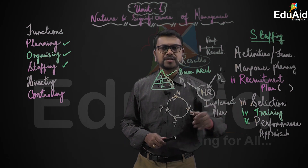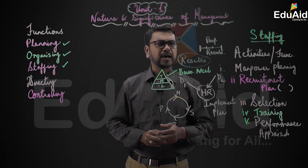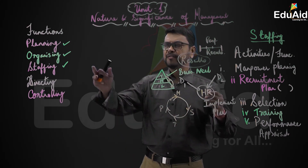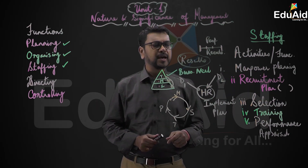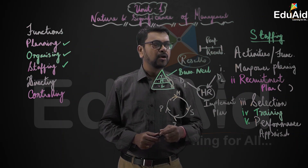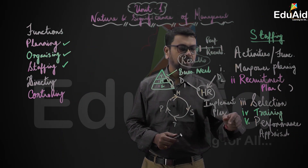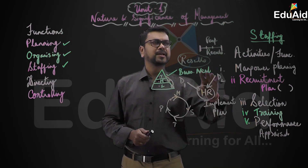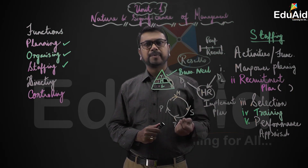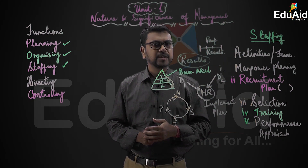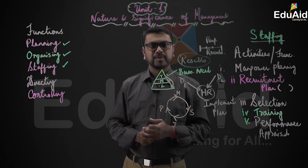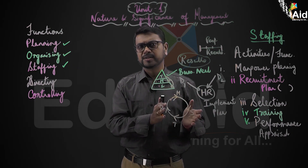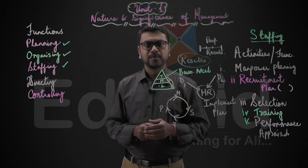We have come to the end of the topic on staffing as a function of management. Write down a few practice questions: one broad question is 'Explain the staffing function' covering all the steps. You will also be asked specific questions such as 'What is manpower planning?', 'What is recruitment?', 'What is selection?', 'What is training?', and 'What is performance appraisal?' Also prepare for 'Explain the various functions of management.' Thank you, students.